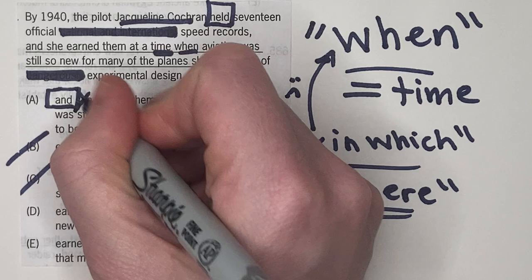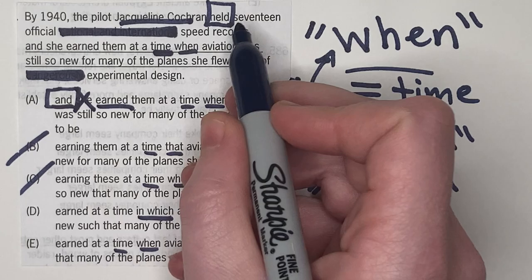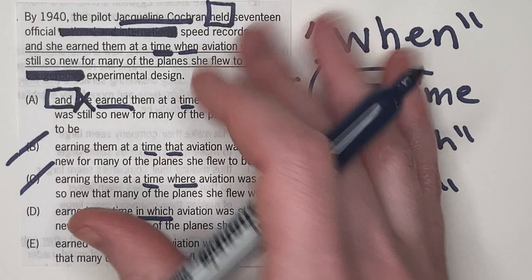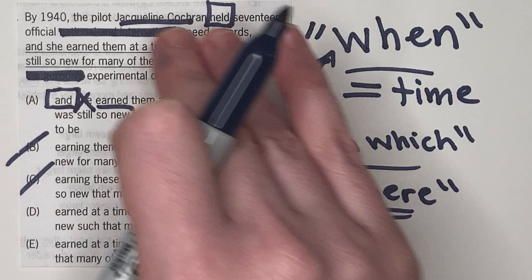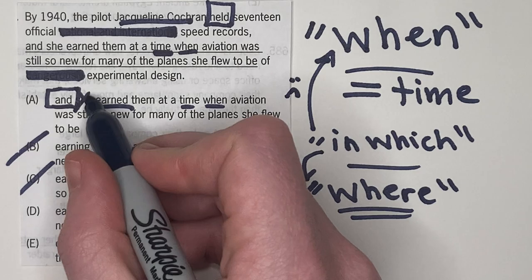you'd never want to have this pronoun here because you don't need it. You can just say that Jacqueline held these speed records and earned them. It would be clear enough because the parallel structure would go verb and verb. You wouldn't need to go Jacqueline verb and pronoun verb.